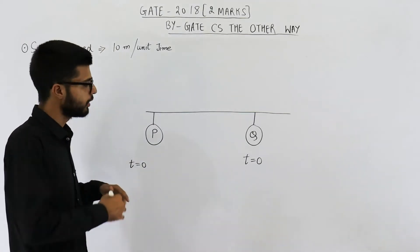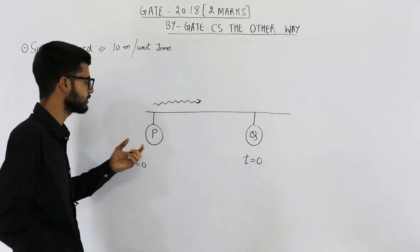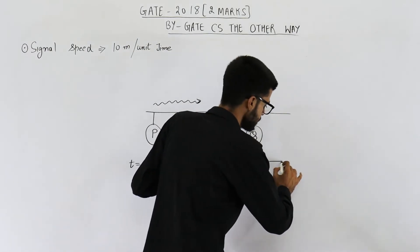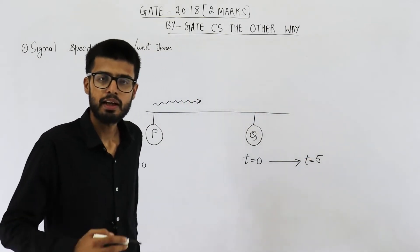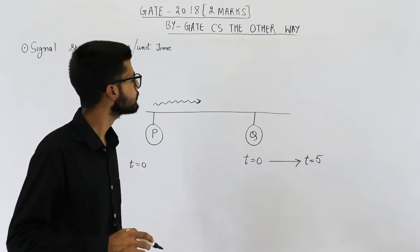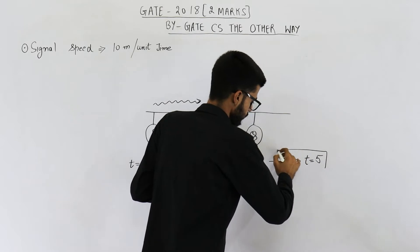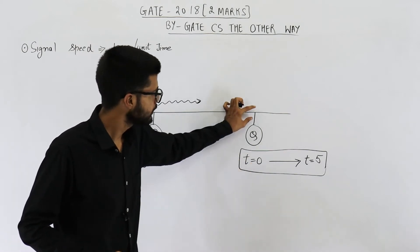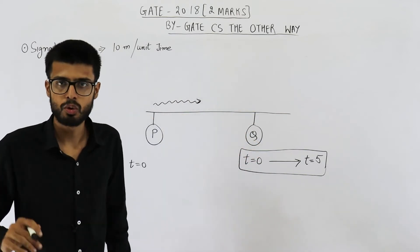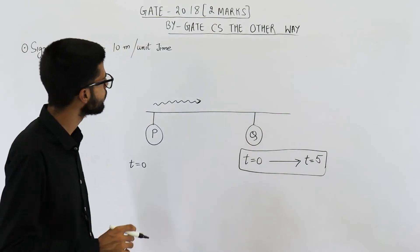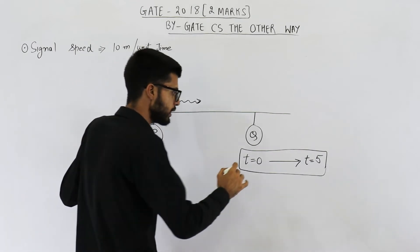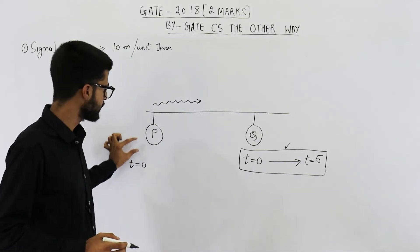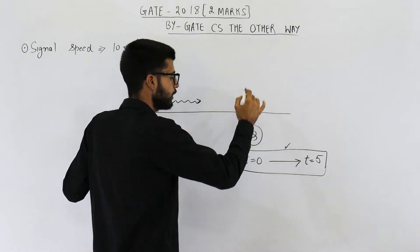At time T=0, P will start sending the signal because it has seen the channel was empty for five time units. At the same time, Q will start sensing the channel and will sense it for five time units, until T=5. If throughout this period from T=0 to T=5 the channel appears empty to Q, Q will think no one is sending data and Q will also start sending, causing a collision. So the first bit of P's packet must reach Q's location within this window.